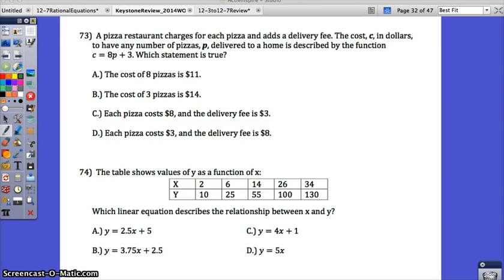Okay, starting with number 73. A pizza restaurant charges for each pizza and adds a delivery fee. The cost C in dollars to have any number of pizzas P delivered to a home is described by the following function. C equals 8P plus 3.